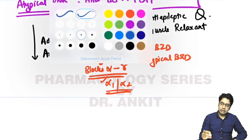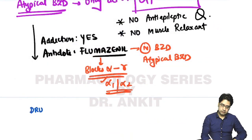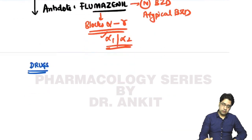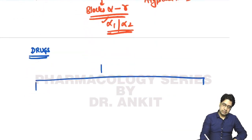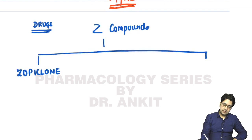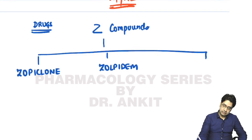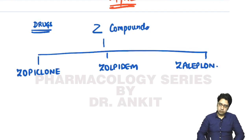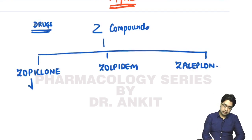The drugs among atypical benzodiazepines all start with the letter Z, hence they are called Z compounds. The three drugs are zopiclone, zolpidem, and zaleplon. Zopiclone has also been modified into S-zopiclone, which is the S-enantiomer of zopiclone.